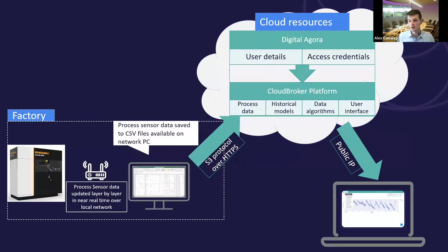This is an overview of our technical architecture. We stream machine sensor data up to the cloud and use the Cloudbroker platform resources to carry out our analysis using machine learning algorithms, modelling the data as a digital twin based on the sensor information and visualizing it in the cloud. This allows users to remotely log in and view the data and increases the transparency of the process, bringing vital process information to the fingertips of key decision makers.